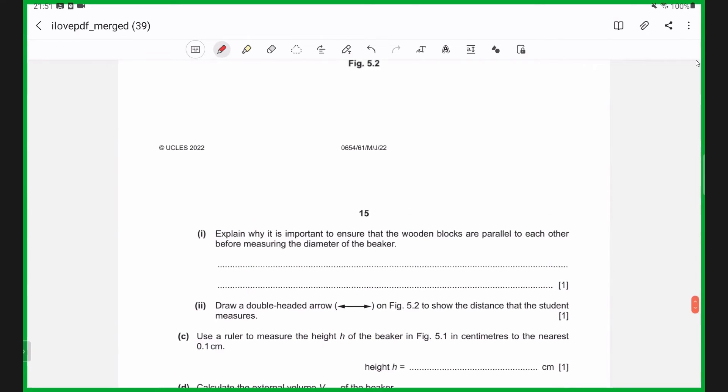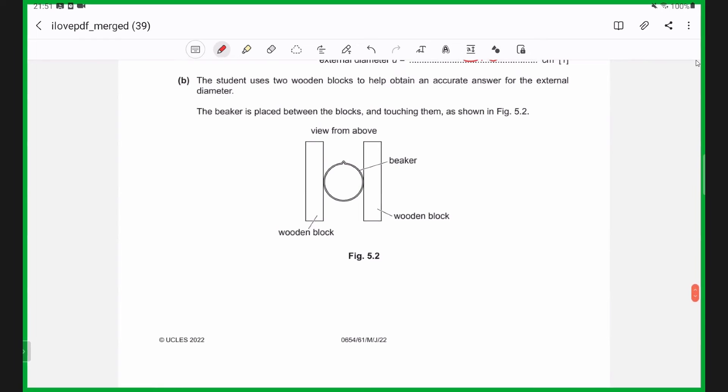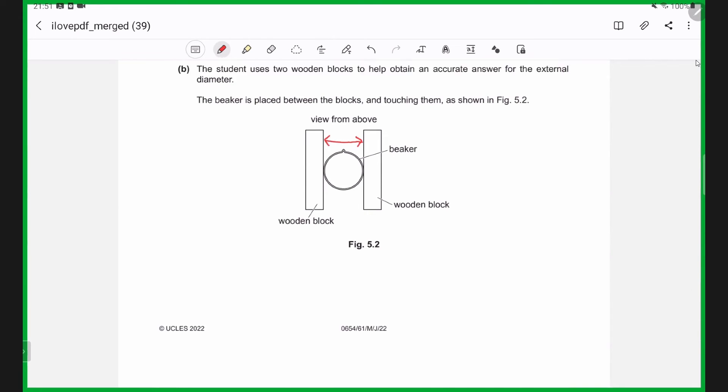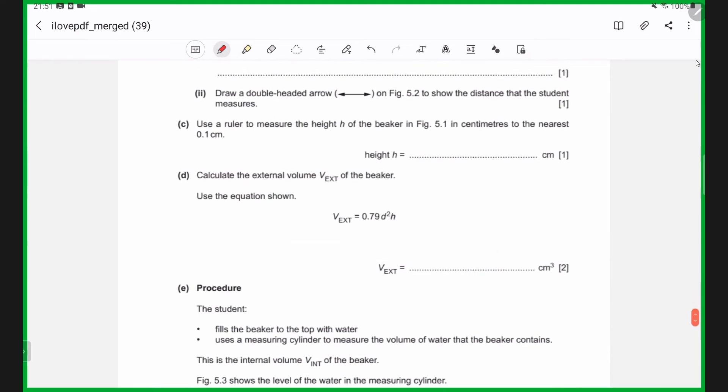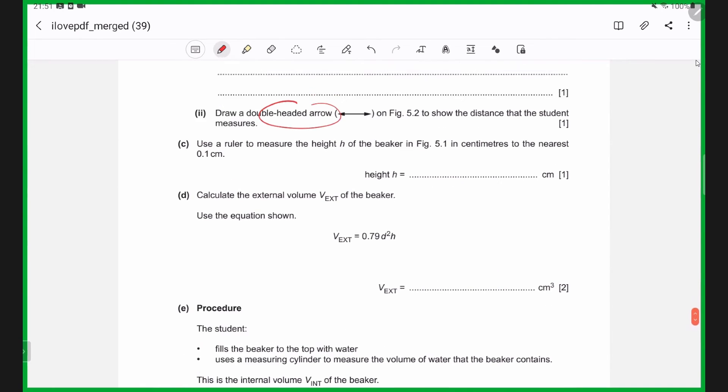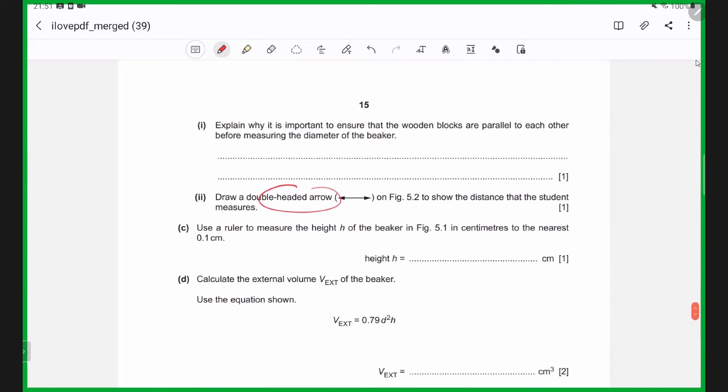And now we're going to talk about how it's important to measure the wooden blocks parallel before measuring the diameter of the beaker. So in this experiment, the student's trying to measure the diameter of the beaker using two wooden blocks as this distance here. That's basically in the next part of the question where you're asked to draw a double-headed arrow. And you need to talk about why the blocks have to be parallel, so that the distance doesn't change, or the distance is the same, to ensure that distance is the same.